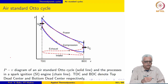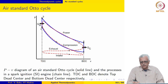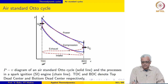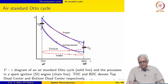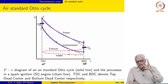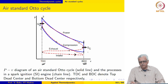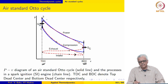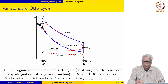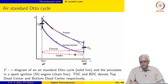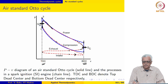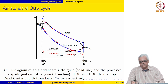We may represent the processes on a P-V diagram. The volume is bounded by top dead centre and bottom dead centre. The red chain line shows the actual processes in the SI engine: the piston moves from TDC to BDC during intake, then the mixture is compressed, the spark ignites the mixture at essentially constant volume, the burning mixture pushes the piston down, and in the exhaust stroke the exhaust valve opens and gases are expelled.